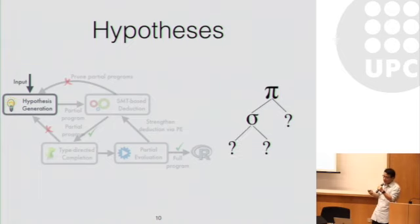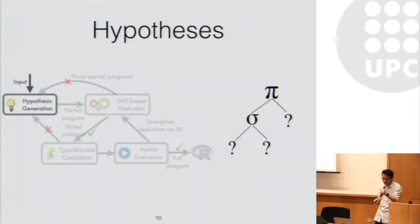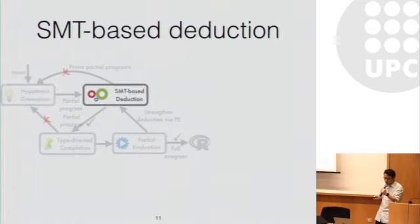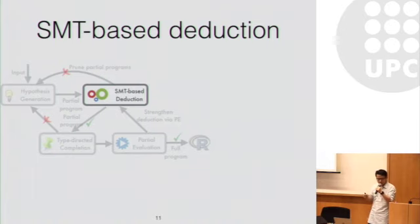The system can also generate other hypotheses. Here is another example — a composition of both projection and selection. Once we generate this hypothesis, we send it to the SMT-based reasoning engine to check whether it is feasible to complete that hypothesis.